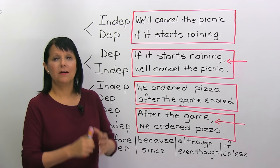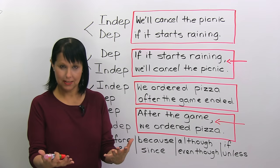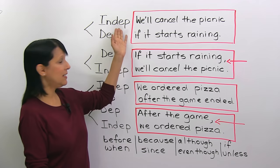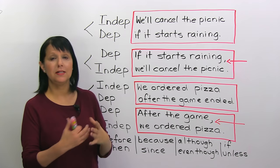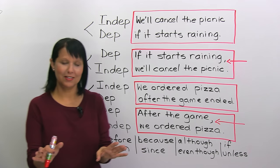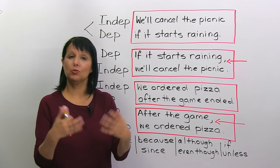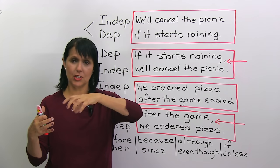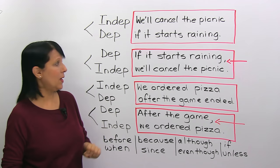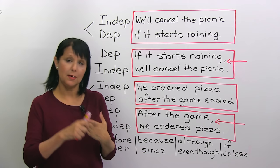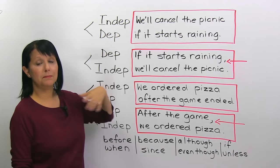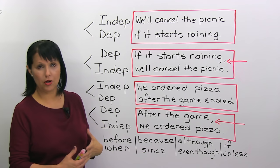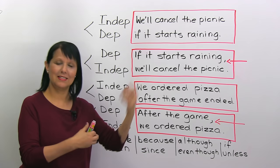First of all, what is a complex sentence? A complex sentence in English is a sentence which has an independent clause and a dependent clause. A clause is just a group of words that has a subject and a verb. The independent clause can stand on its own — it's a sentence by itself. The dependent clause cannot stand by itself; it depends on the other part of the sentence to make it whole.